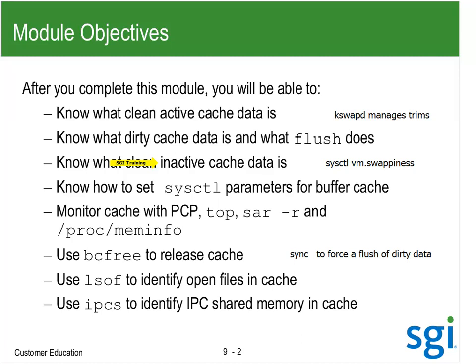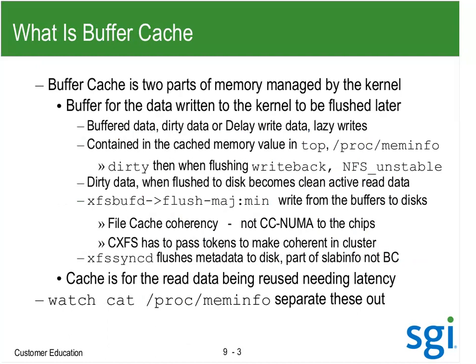I have been talking about this concept of file system buffer cache - that's kind of an old Unix term. The file system means I'm writing data using XFS, Extended 3, Extended 4, where there are superblocks, directories, and inodes to find where that file is.